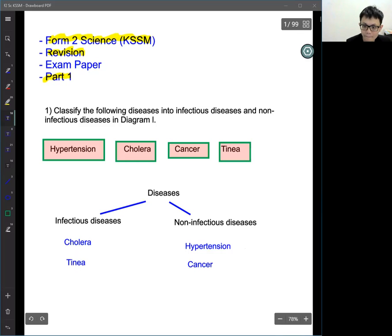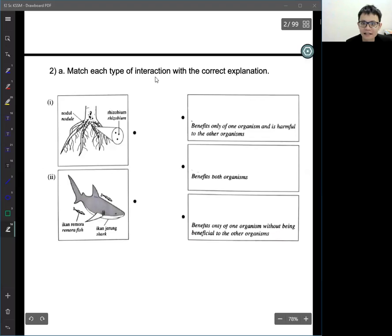So match each type of interaction with the correct explanation. So basically you can see the question: rhizobia and legume, and remora fish and shark. I think shark don't get any benefit, right? So benefit and benefit, both organisms benefit, only one organism. So Megan, can you help me to answer this question? Yes teacher.